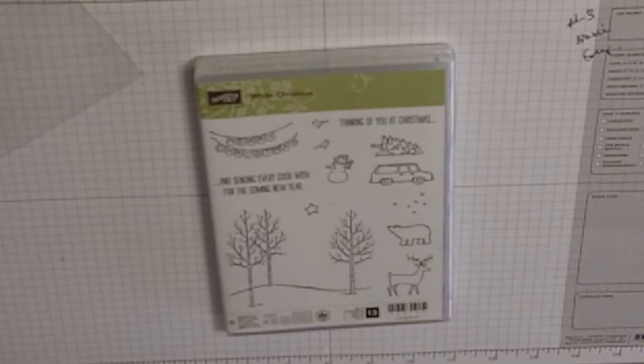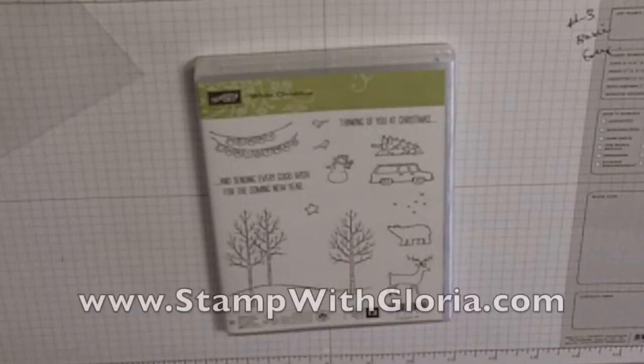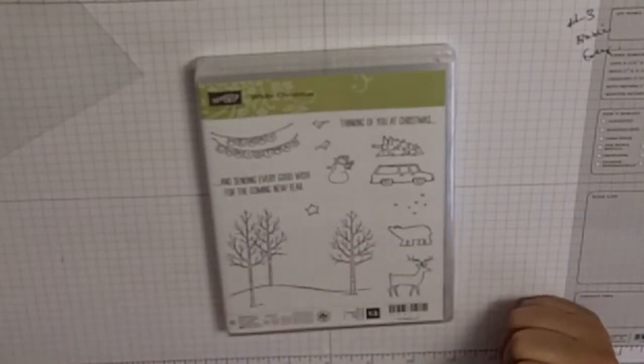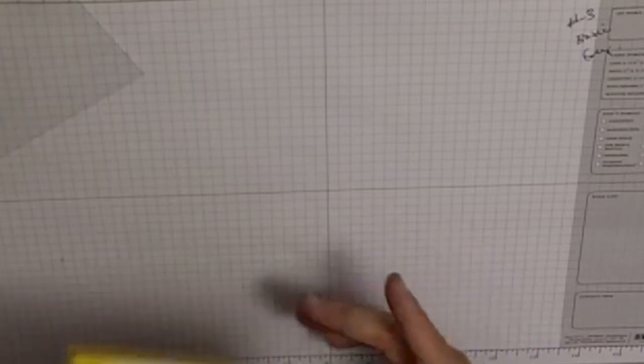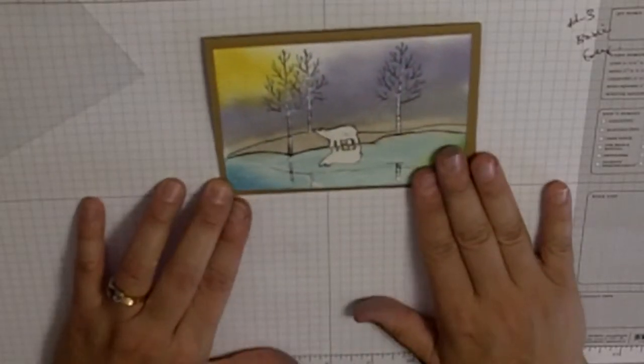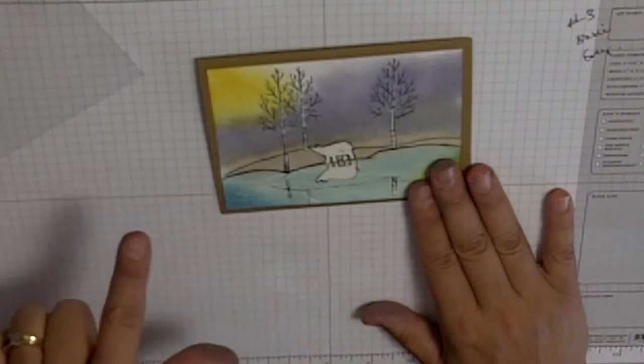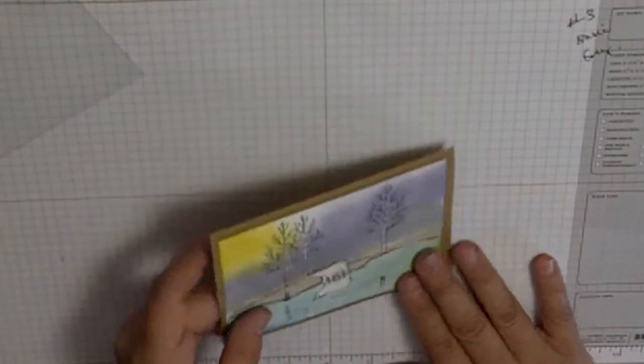Hi, this is Gloria with stampwithgloria.com. Today I'm going to show you our number three background in the series of four that I'm doing for White Christmas. I'm going to combine a couple of techniques that I've already showed you. We're going to use the White Christmas set again and the card we're going to make is a real masculine looking card. So how do we get this effect? Well let me show you.